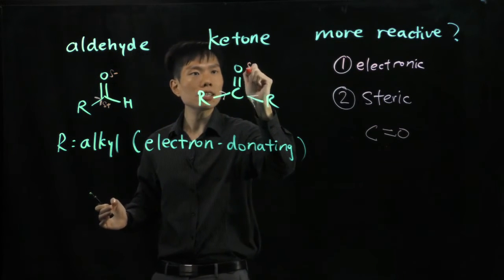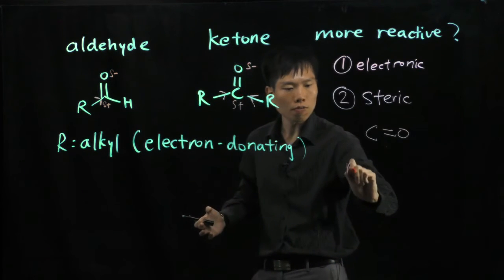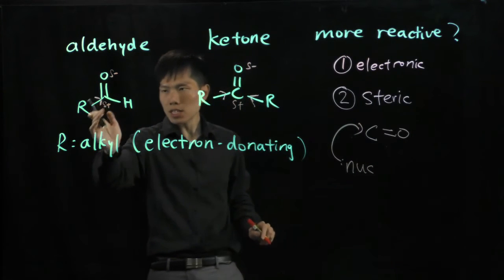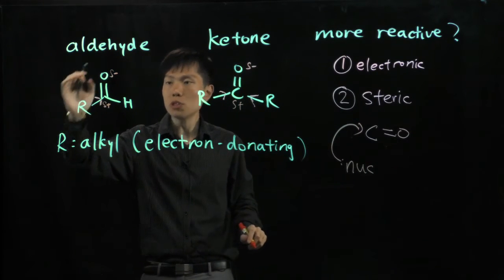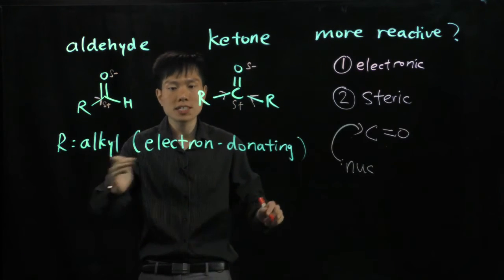Delta negative, delta negative, delta positive. So we know that the nucleophile would like to attack the carbon here. Now in this case, our group reduces the positive charge of the carbon because it's electron donating.